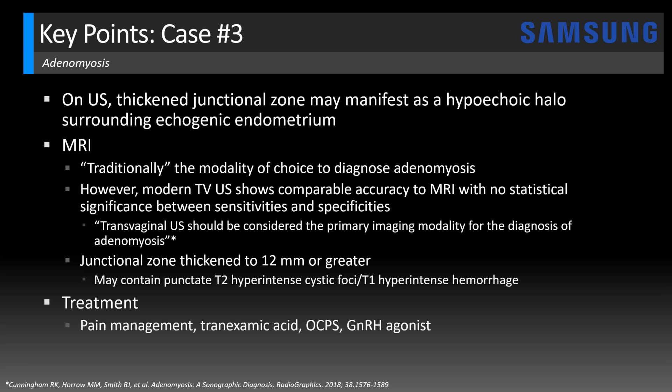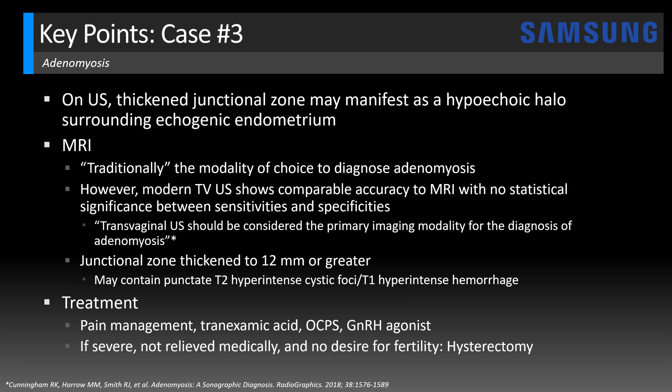Treatment is mainly aimed at pain management, managing menorrhagia, and hormonal therapy including GnRH agonists. For patients with severe adenomyosis not relieved medically and with no desire for fertility, hysterectomy may be considered. Uterine artery embolization has also been increasingly used to treat adenomyosis with promising results.